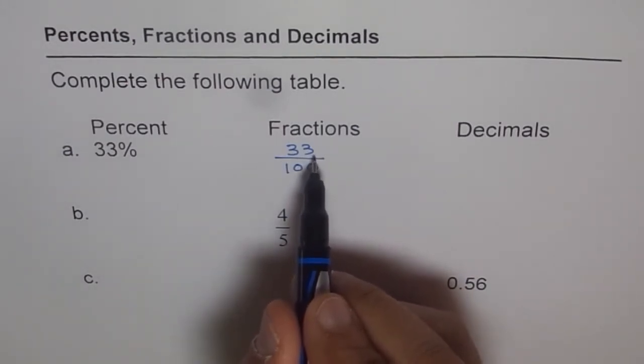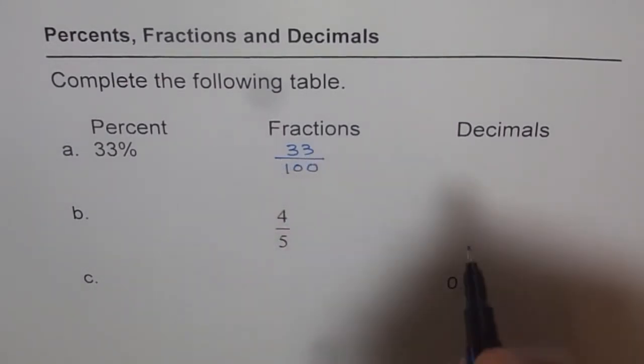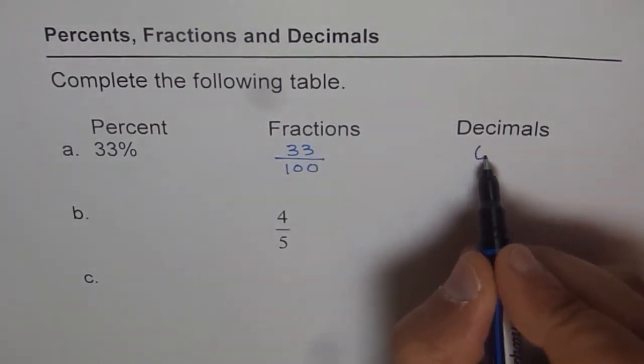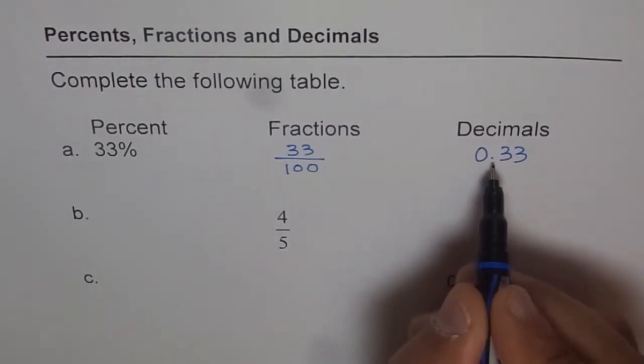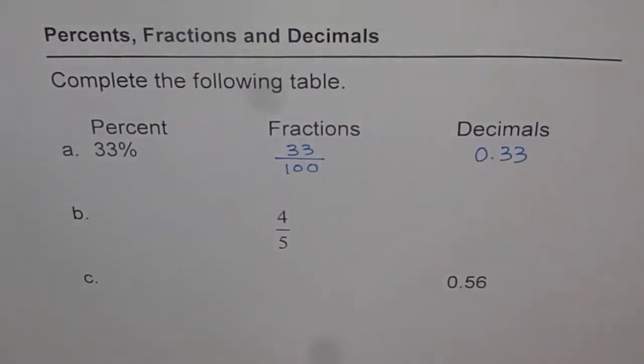For decimals, dividing by hundred means moving decimal two places to the left. Here the decimal is at the end - when you don't see it, it means it is at the end. Move it two places to the left and you get 0.33. It is good practice to put 0 before the decimal if there are no other numbers.